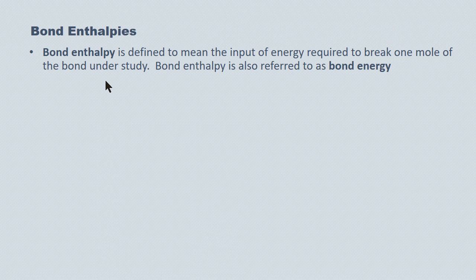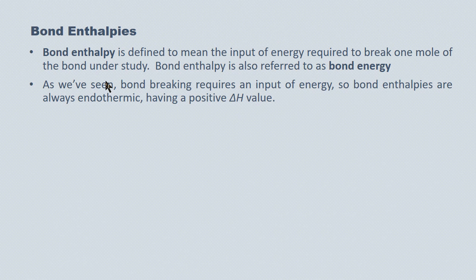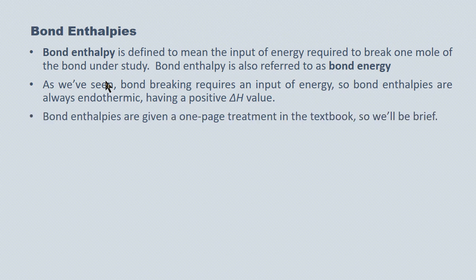Bond enthalpies — your textbook touches on this topic, typically in a single page, though it's expanded quite broadly at the university level. Bond enthalpies are defined as the input of energy required to break one mole of the bond under study, also referred to as bond energy. Bond breaking requires an input of energy, so bond enthalpies are always endothermic — they always have a positive delta H value.